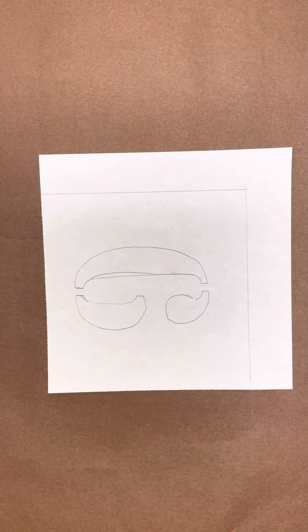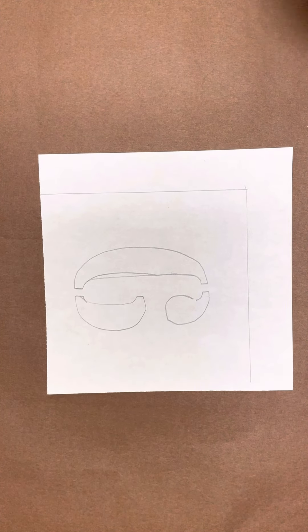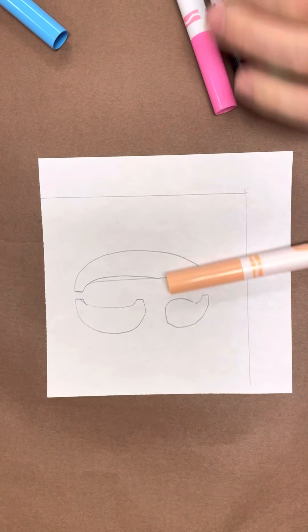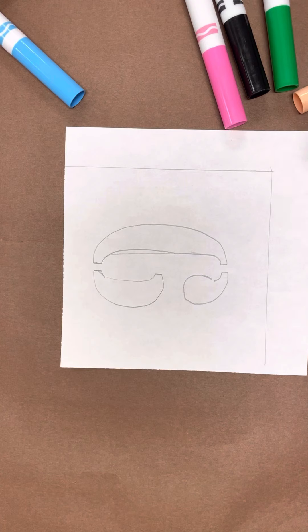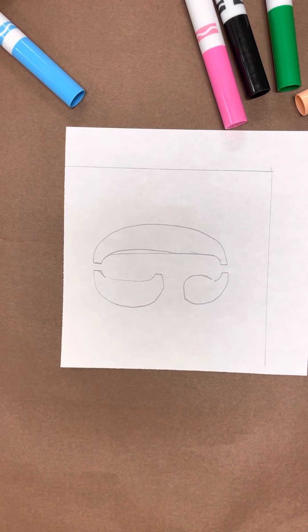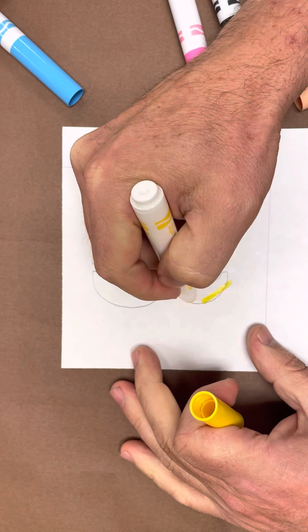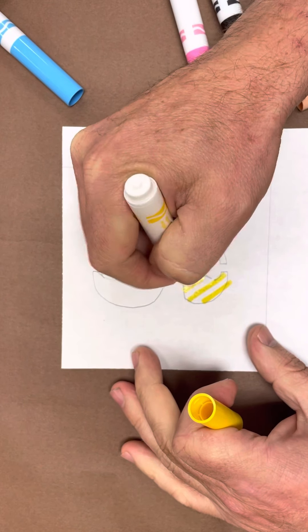All right, so we are going to put some patterns on this number. Think about my colors. You want it to be very happy, so I'm going to do some happy colors. I'm making some stripes.